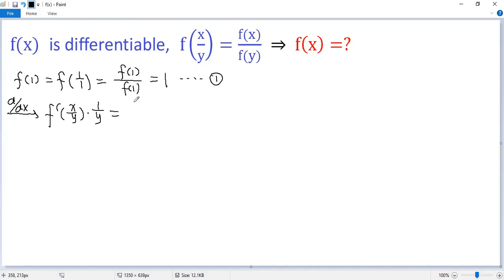The right side, f(y) is just a constant. Now, we let y equal x. So we get f'(x) over x, which is 1, times 1 over x. The right side is f'(x) over f(x).